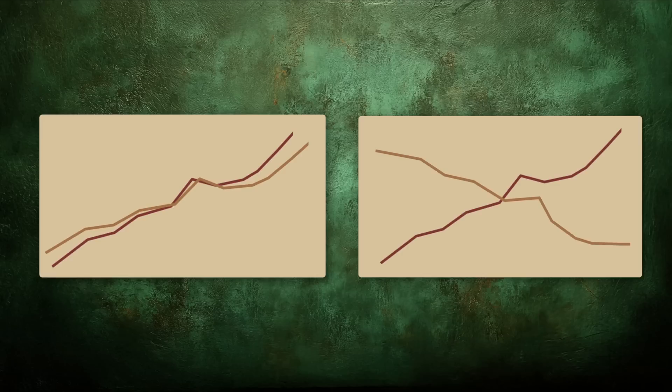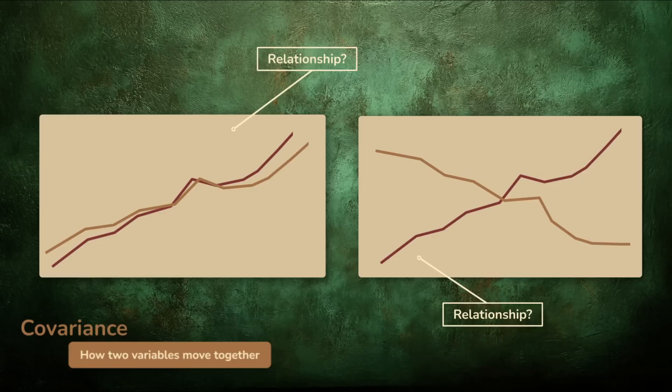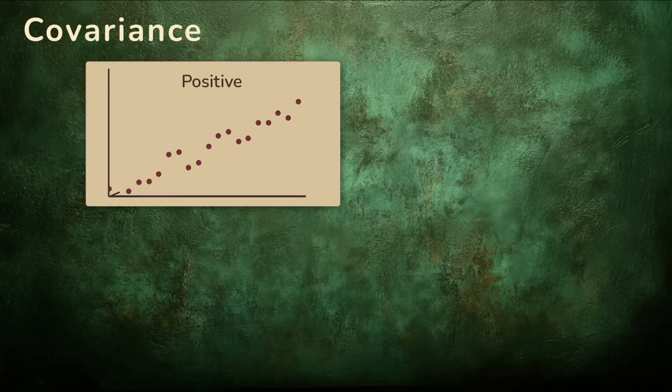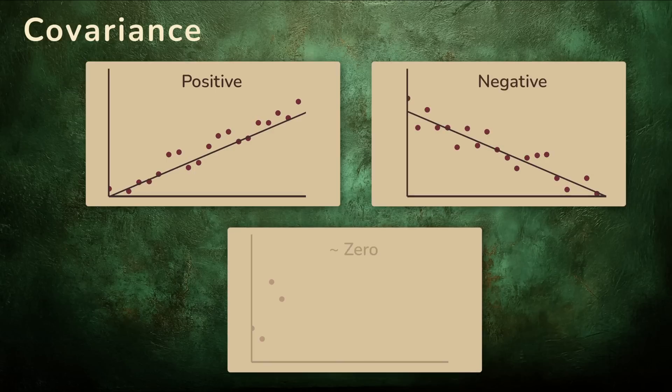Some data values move together, others in opposite directions. We want a way to measure the relationship, not just notice it, quantify it. That measurement is called covariance. It's a way to put a number on how two variables move together. Positive covariance means they rise and fall together. Negative covariance means they move in opposite directions. No clear pattern, the covariance will be close to zero.